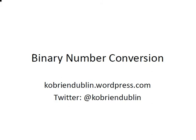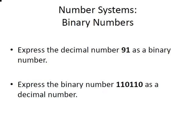In this presentation we're going to look at binary number conversion — converting from binary to decimal and decimal to binary. I have two little tasks here. The first is to express the decimal number 91 as a binary number, and the second is to express the binary number 110110 as a decimal number.